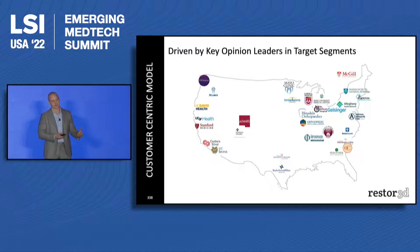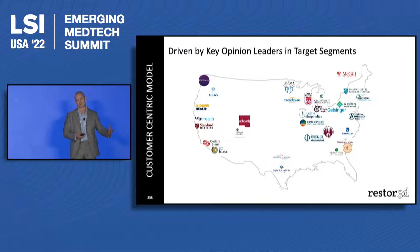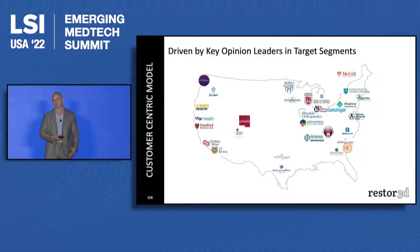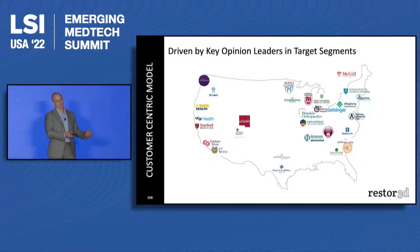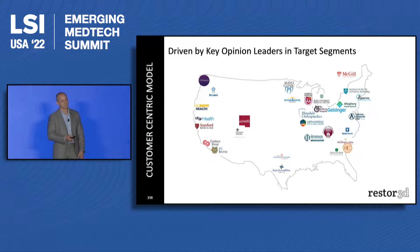This is a model where we actually work with surgeons directly. We still have sales reps, and we still need people to help sell products and cover cases in certain situations. But we're not building our business because of that channel — we're building it because of the needs the surgeons have. And this is an example of the types of hospitals we're already working with.